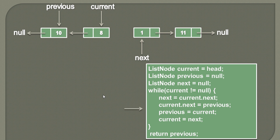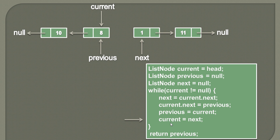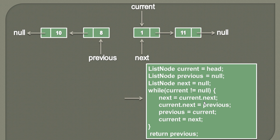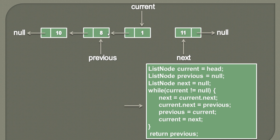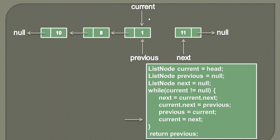To previous we now assign the value of current. Then we assign whatever value is in next to current, so current traverses to the third node. We again iterate the while loop and check whether current equals null. Current points to the third node, which is not null, so the loop executes. We assign current.next to next, then assign previous to current.next. Moving ahead, we make previous point to current, and finally make current point to the value which next holds, which is the fourth node.